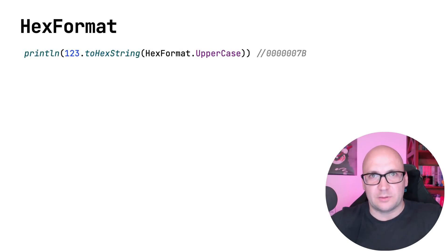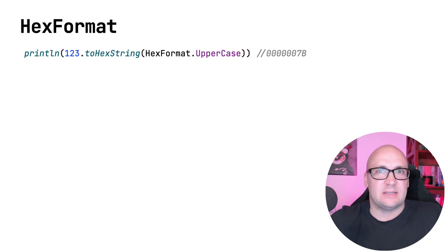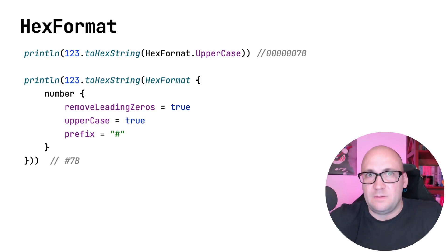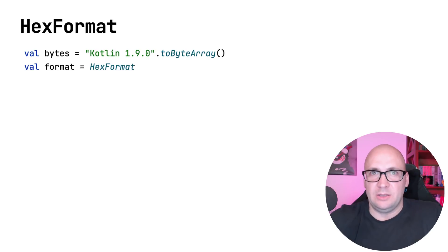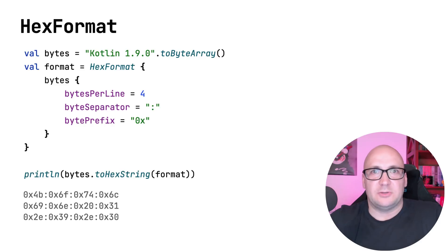This release wouldn't be complete without a new experimental feature. In 1.9, the HexFormat class and its related extension functions are provided as an experimental feature that allows you to convert between numerical values and hexadecimal strings. Here is an example of converting an integer value to a hexadecimal string in uppercase format. You can configure other formatting options with HexFormat builder — there is a number configuration block for numbers, and a bytes block for byte arrays. For instance, you can configure bytes per line, a separator, and a prefix for each byte, then apply this format when converting a byte array to a hexadecimal string.